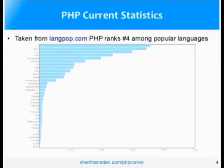Taking a look at some more current statistics for PHP — and this is by no means an authoritative statistic — but from langpop.com, we can see that PHP ranks number four among popular languages. This is based on source code available online from sites like Google Code, and based on how much source code is available for each language, we can determine how popular that language is. It does give us a pretty good perspective that PHP is in widespread use all over the world.